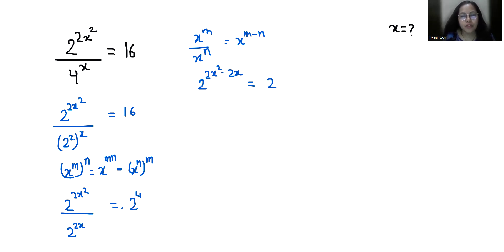Now a power b equals a power c, we can write it as b equals c. That means if the bases are equal, their powers are also equal. So 2x square minus 2x equals 4.